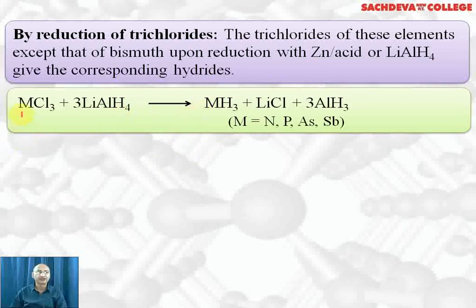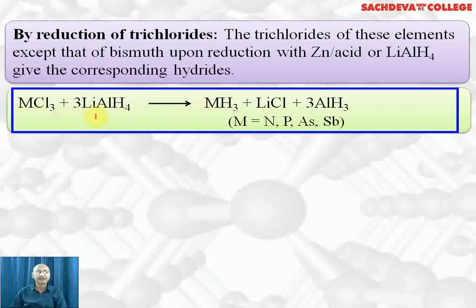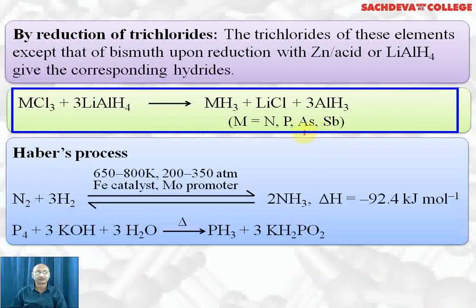The general reaction: MCl₃ reacts with 3 moles of lithium aluminium hydride to give MH₃, lithium chloride, and 3 aluminium hydride. M can be nitrogen, phosphorus, arsenic, and antimony, but cannot be bismuth.